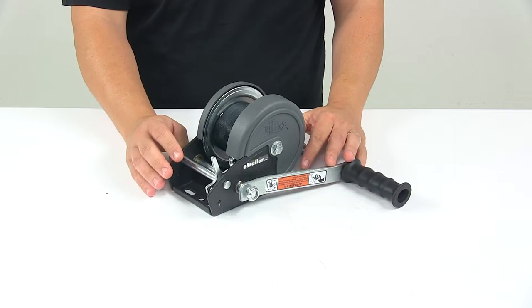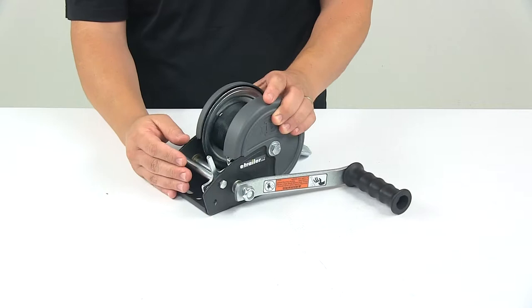Now the steel components on this winch feature the zinc tough plate finish to protect them from rust and corrosion. Also the base has a nice powder coated finish on it to protect it from rust and corrosion.